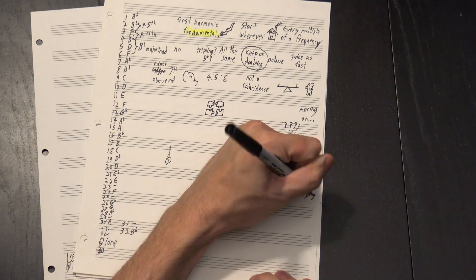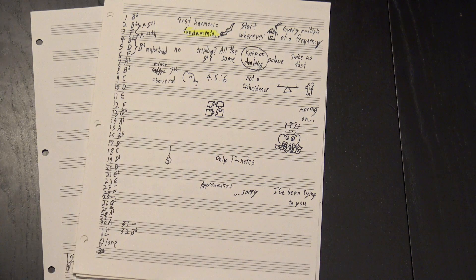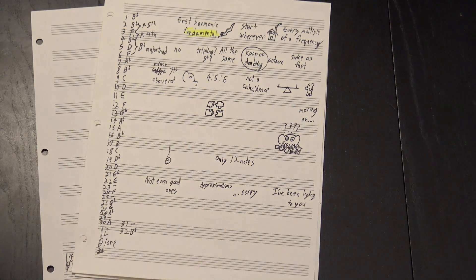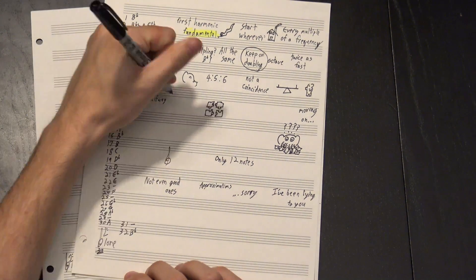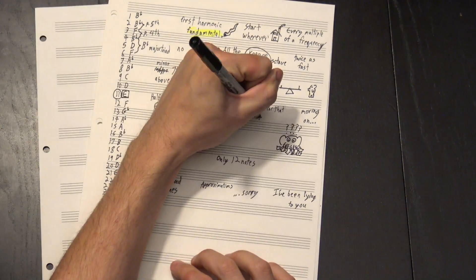Well, this is where it turns out I've been lying to you the whole time. Sorry about that. It turns out that these note names are only approximations. Some of them aren't even very good approximations. This one, for instance, is almost halfway between E and Eb, but we don't really have a name for that note, and it's a little closer to E, so we just round it.